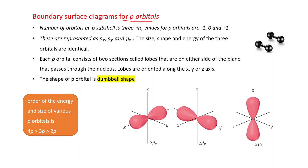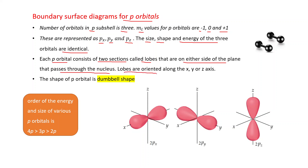There are 3 orbitals in the p sub-shell, with ml values of -1, 0, and +1, represented as px, py, and pz. The size, shape, and energy of the three p orbitals are identical. Each p orbital consists of 2 sections called lobes, on either side of a plane passing through the nucleus. Lobes are oriented along the x, y, or z axis. The shape of a p orbital is dumbbell-shaped.